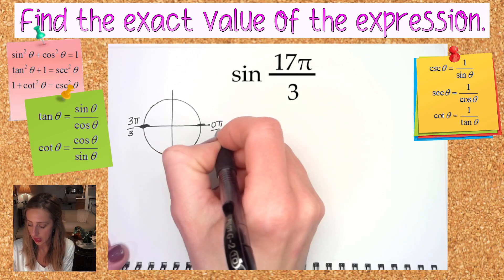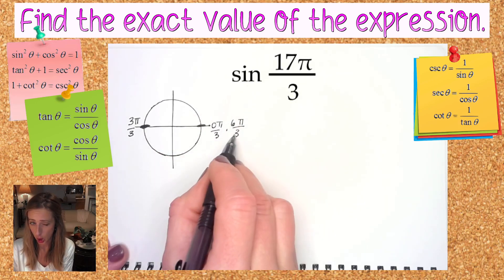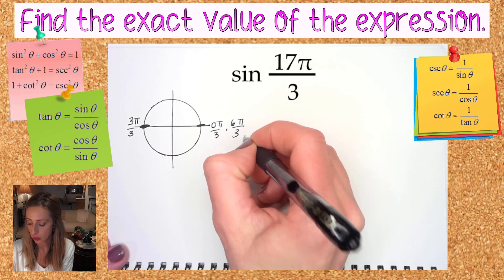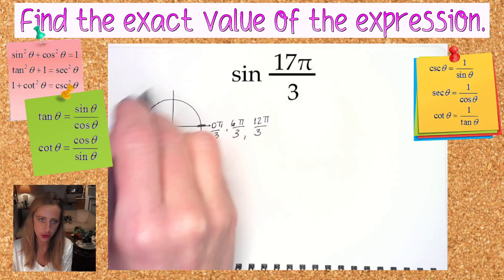Another three would be 9π over 3, another three would be 12π over 3. When really if you know the full circle is six you should know the second round is 12, right?